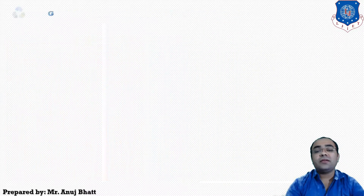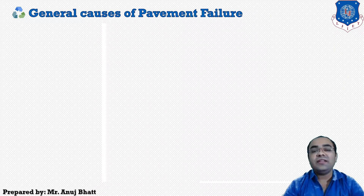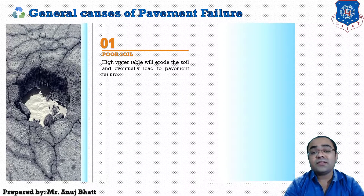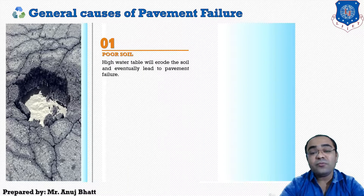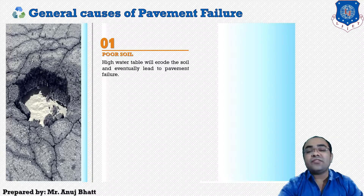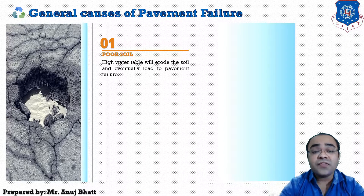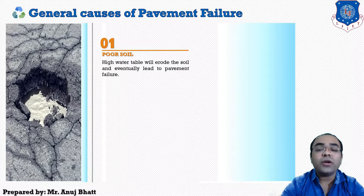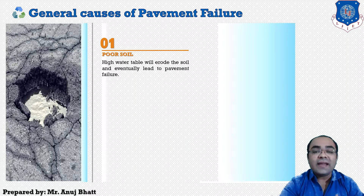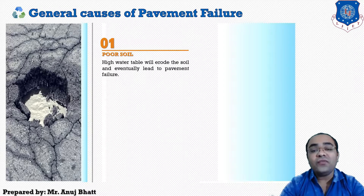The next topic is the general causes of pavement failure. The first reason is poor soil. This is the most common problem in pavement design because we use soil in the subgrade, which is the foundation of the pavement. The most common problem is a high water table. If the water table is very high, it makes the subgrade soil more moisturized and clayey, and that clayey soil decreases the strength of the subgrade.